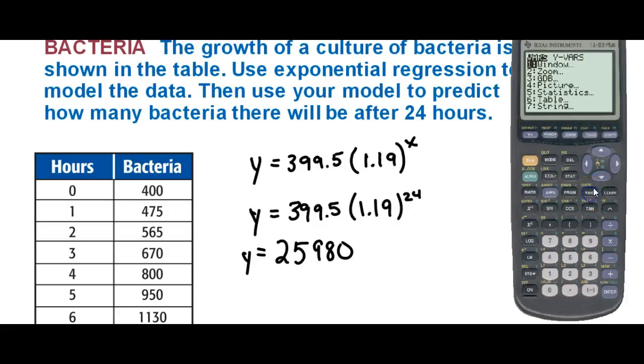We're also now going to tell our graph to put this function into y for us. If you put another comma, go to your variables, go over to yVars, and choose function, and y1. That's going to put it into our y1 for us. Then the other thing you want to do is turn your stat plot on. We should be ready to go ahead and graph it here.